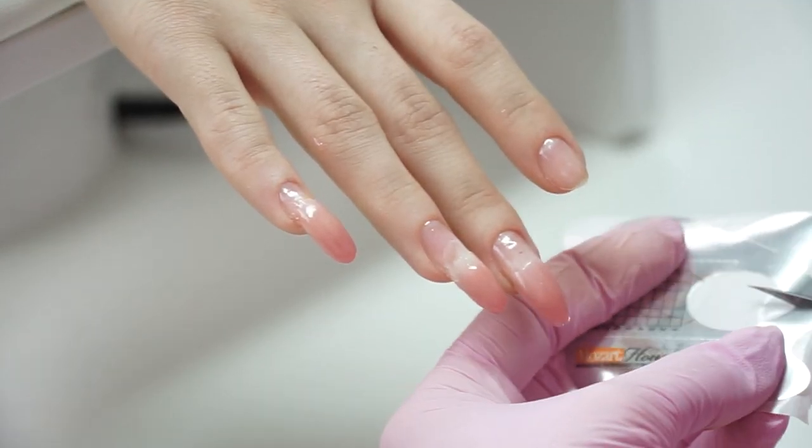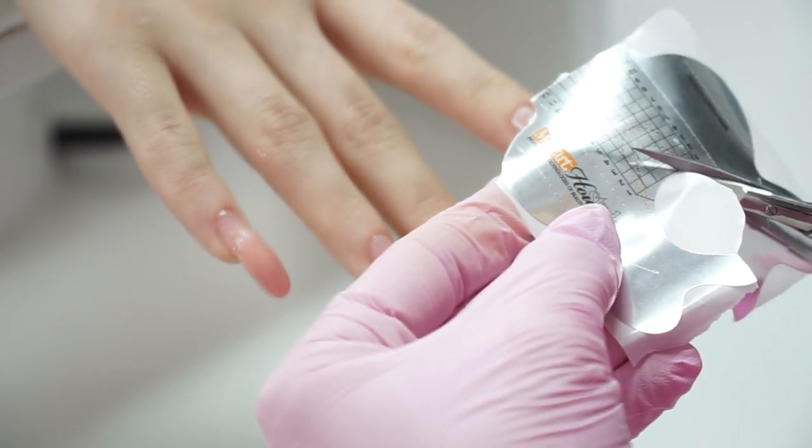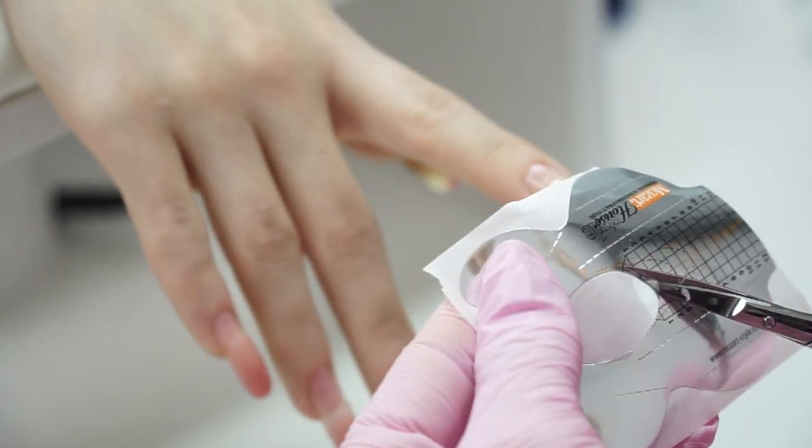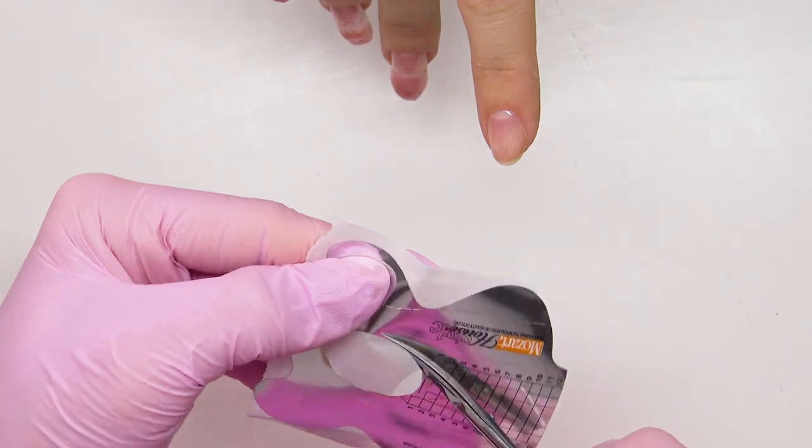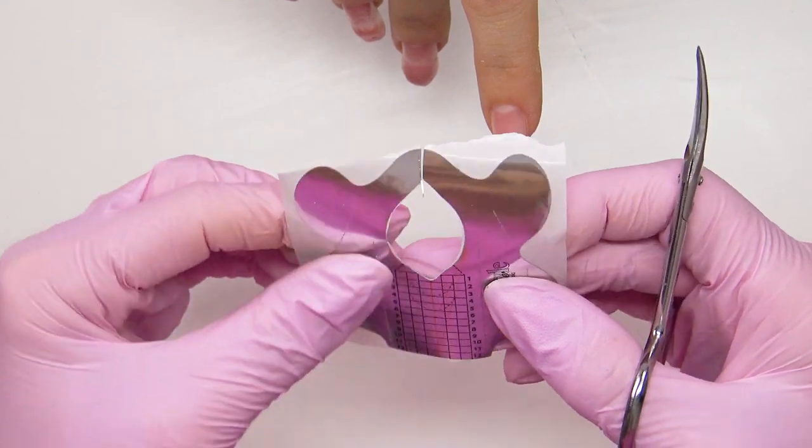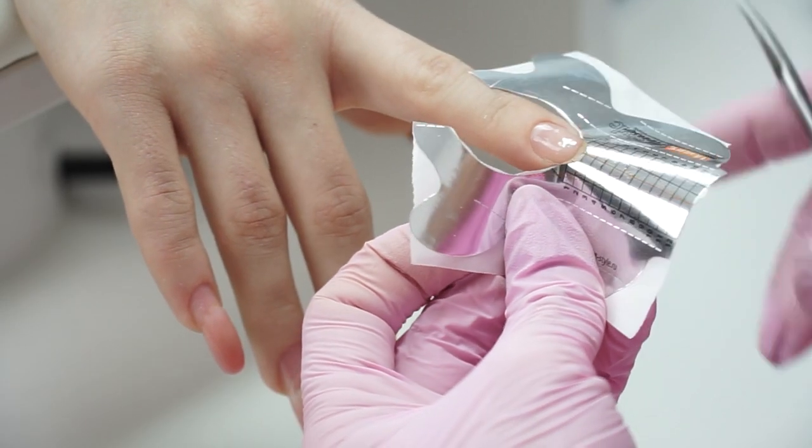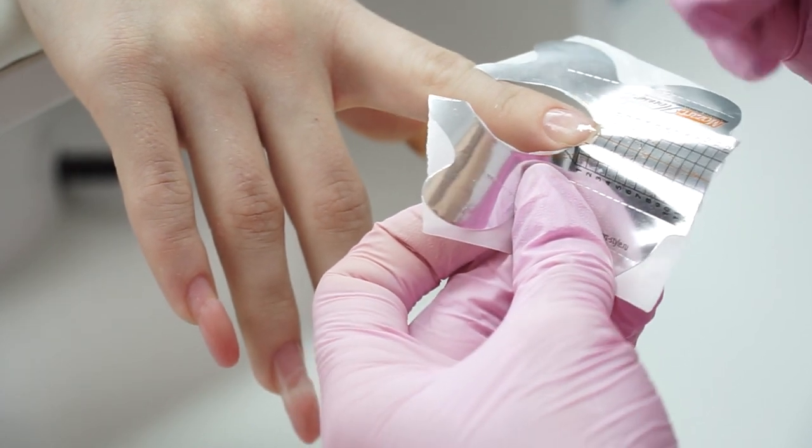On the index finger we will do an extension, since it broke during the removal. I'm cutting out the form to fit the nail. And set it up. Twist it like this, marking the points of growth on the form.